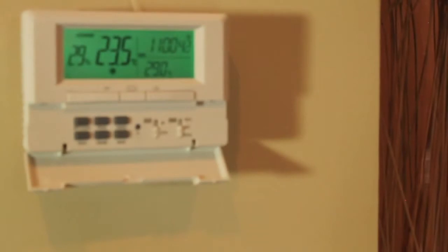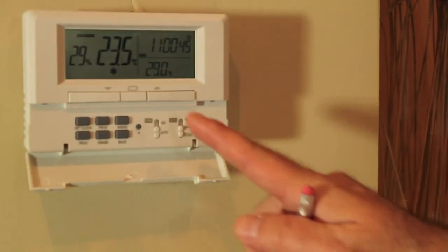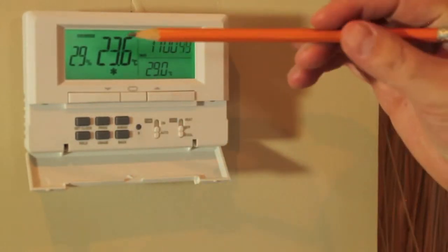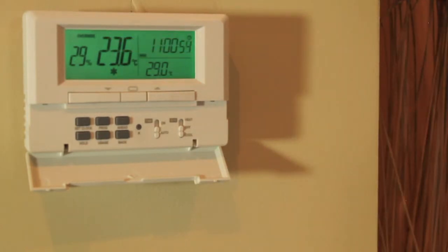At any time you can increase or lower the present temperature without changing the program settings by pressing the up or down arrow buttons. The word override will appear on the M6007. The new temperature will stay in effect until the next program time.